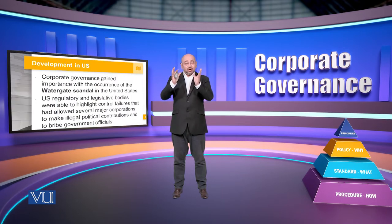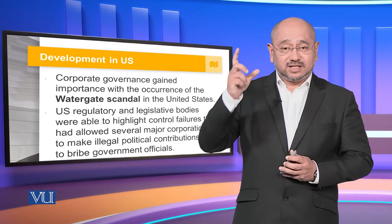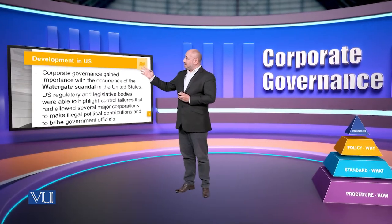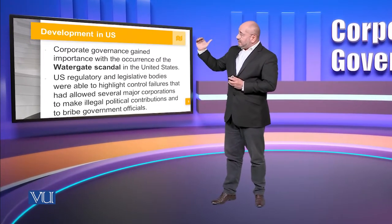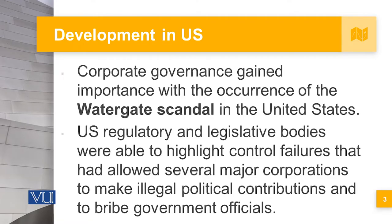When we look at the module of corporate governance, its genesis basically begins with the Watergate scandal. Looking at the Watergate scandal in the United States, we see that it is linked with the emergence of corporate governance as a major field of study and as a major set of regulations. The U.S. regulatory and legislative bodies were able to highlight control failures that had allowed several major corporations to make illegal political contributions and to bribe government officials.